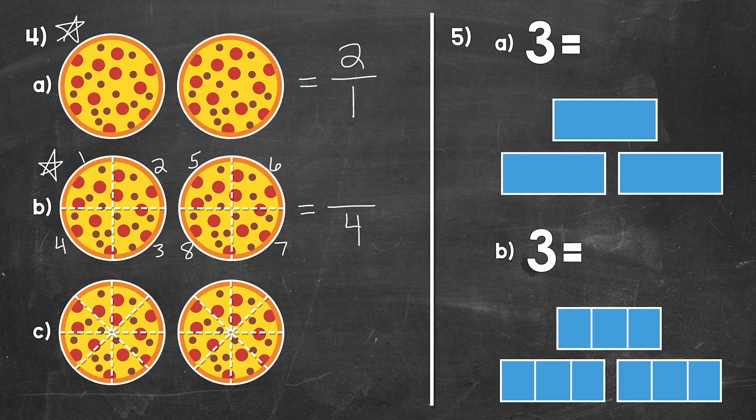We count eight pieces. So eight is our numerator. Eight over four is our fraction — eight fourths. Eight fourths is a fraction equal to two, and those pizzas help us see that.